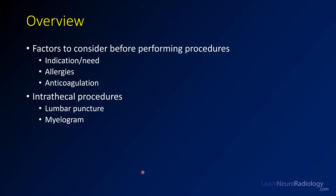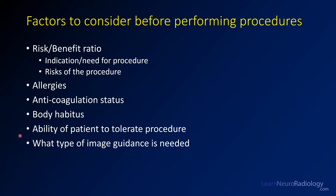We're going to start by talking about what you should think about before performing a procedure, including what the indications might be, what the need for the procedure is, and what patient risk factors there might be. Whenever you're asked to perform a procedure you need to think about what is the risk-to-benefit ratio — what is the need for the procedure, what are the generic risks, and are there any special risks in that patient.